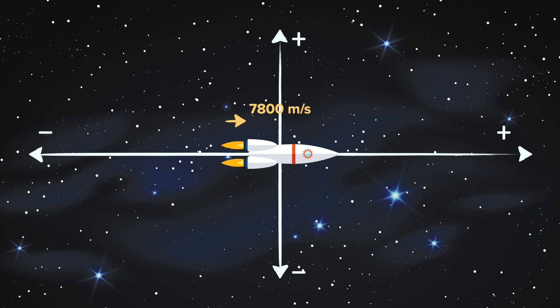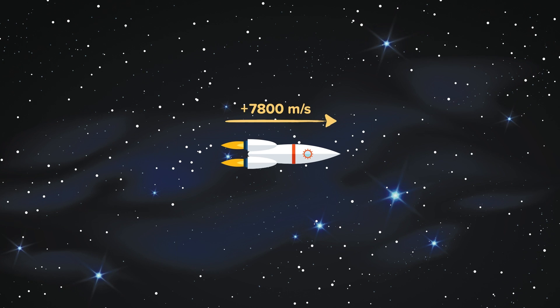The rocket is moving to the right, and so it has a velocity of plus 7,800 metres per second. The vector shows the direction. It is often seen that the positive sign is not shown and can be ignored.